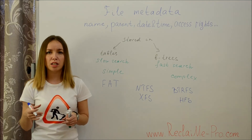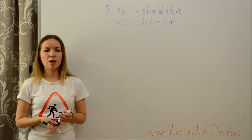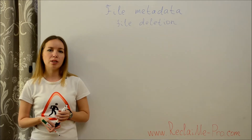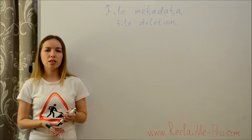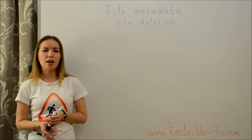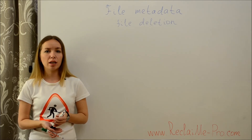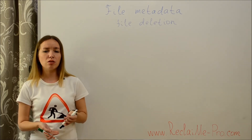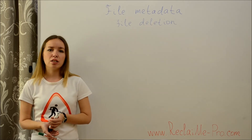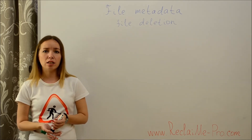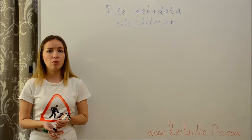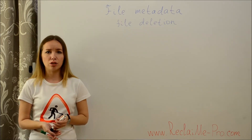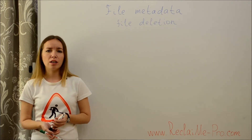File systems storing metadata in tables behave more predictably than those using B-trees. In some file systems, for example in NTFS, when a file is deleted its record in a table is just marked as empty and no more changes are done. Thus, if no data is written to the disk, you can still undelete the file. In file systems like VMFS, when a file is deleted its record in the table is actually zeroed and therefore it is impossible to recover the file. The behavior is the same for all deletions on the same file system.